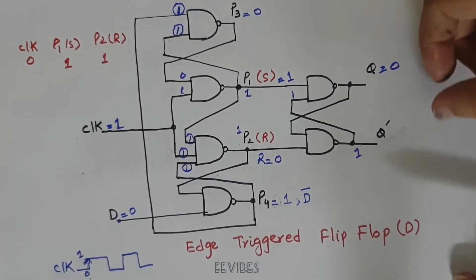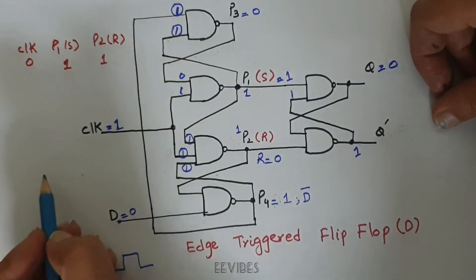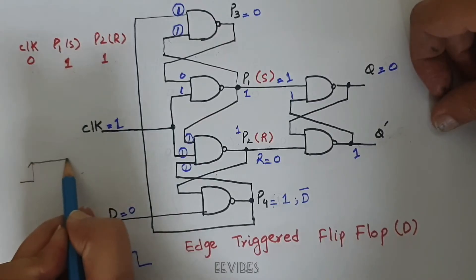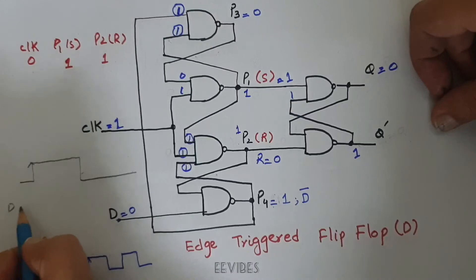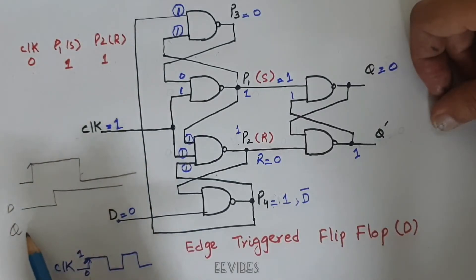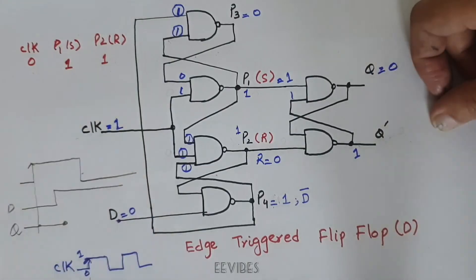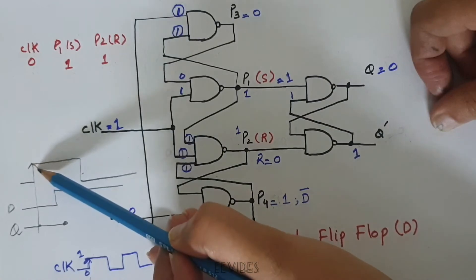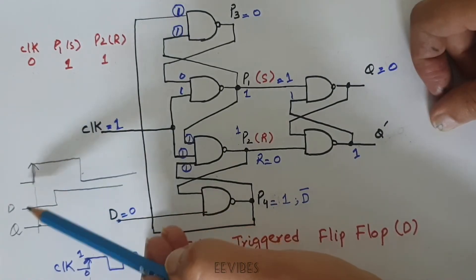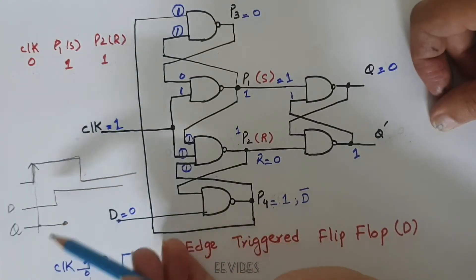Now we will see what happens if the clock signal is held high and D switches its value from 0 to 1. Since it is the edge-trigger flip-flop, changes are only produced at the rising edge of the clock. No matter if D changes its value from 0 to 1 while the clock signal is held high, the output doesn't change — it remains 0.